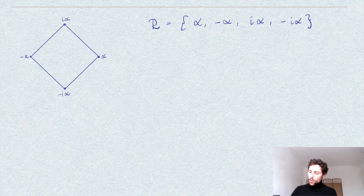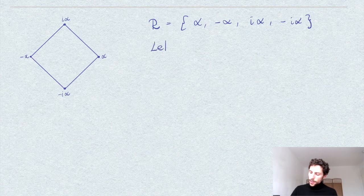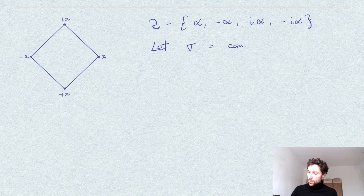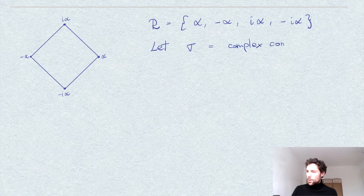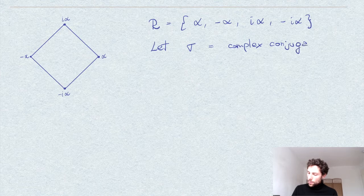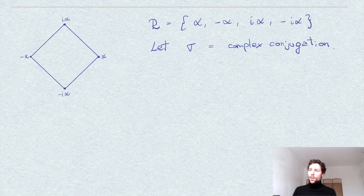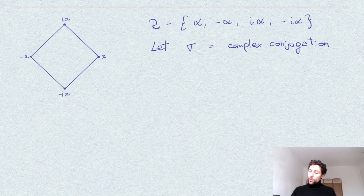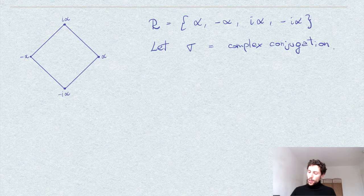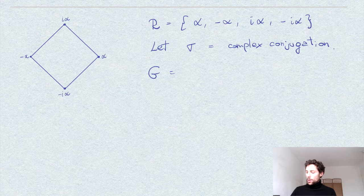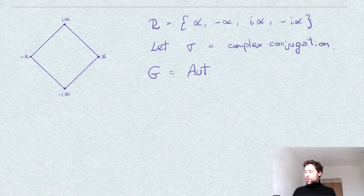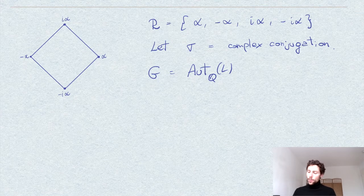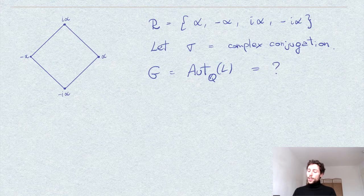So let me denote the complex conjugation by sigma. So here we want to describe, we want to find the Galois group, so I denote it by G, which is by definition the automorphism group of the field L which fixes, fixing the ground field Q. So this is our task.